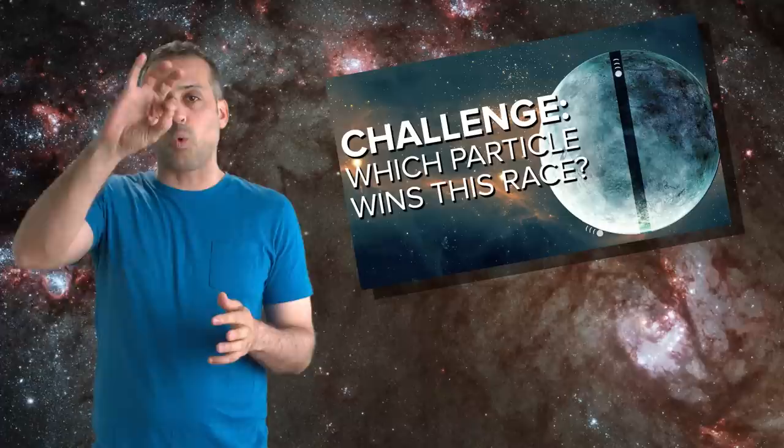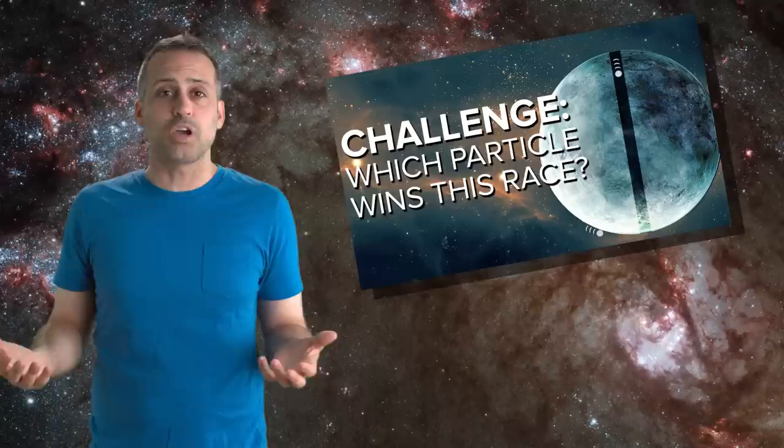Hey, spacetimers. Two weeks ago, we issued a challenge question. Which of two particles, one orbiting around the outside of a planet and one going straight through the middle, reaches the other side first? There was a Newtonian and an Einsteinian version of the challenge. Let's start with the answer to the Newtonian version.